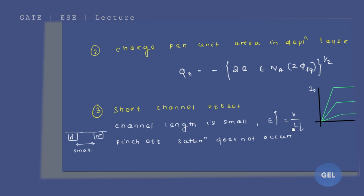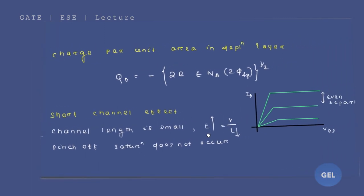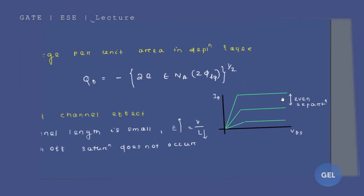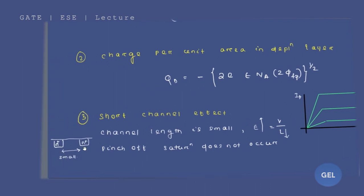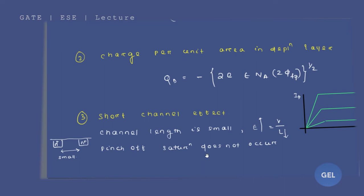Short channel effect is actually due to the effect of a strong electric field. You will get even separation between all of the output characteristic graphs when taking different values of Vgs without any application of input voltage. The key point to remember in short channel effect is: because of the small length of the channel, the effect of the electric field is so strong that pinch-off saturation does not occur — instead, the applied electric field causes the saturation.